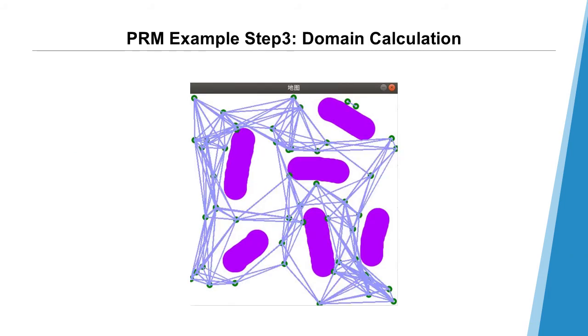Step 3, domain calculation. In this step, we connect the lines between all these points and detect the collision between lines and obstacles. However, we are not going to connect all the points, such as the initial position and destination. We will only connect the points whose distances are not too large. So we have to define the size of the domain.